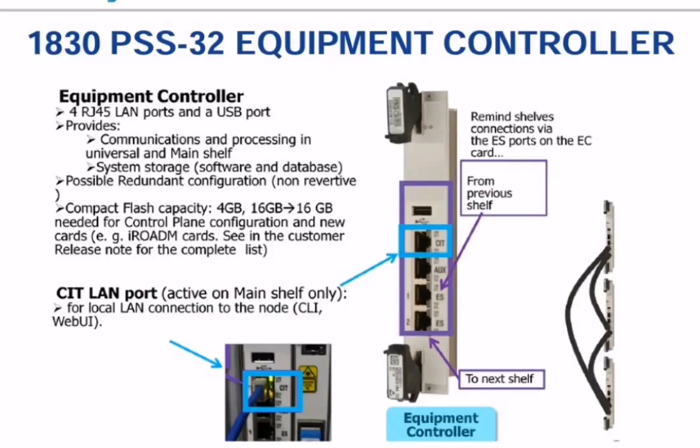The next one is the EC equipment controller card, which is installed at slot 1. This equipment controller card contains four ports: the first one is CIT, the second one is auxiliary, and the next ports are ES1 and ES2.